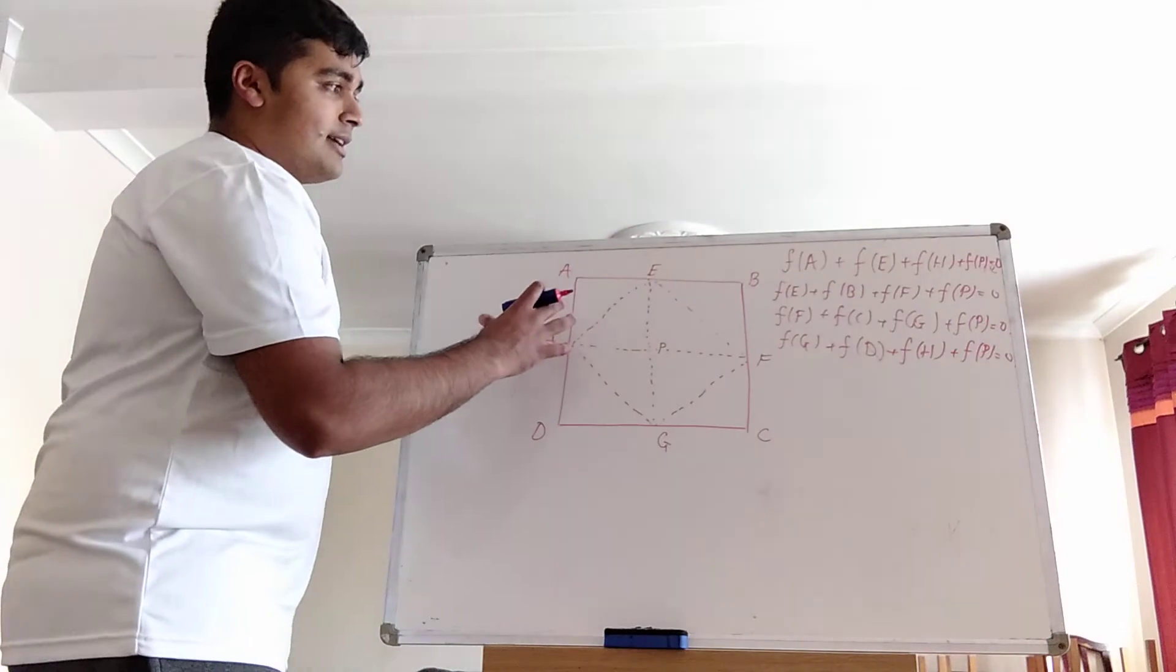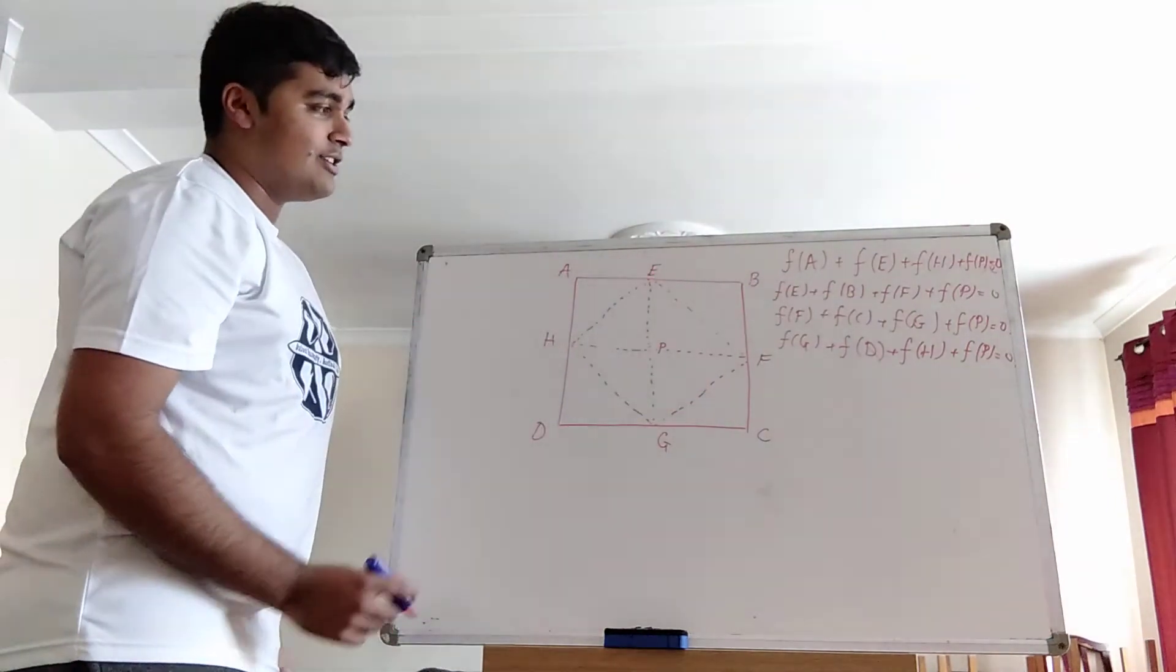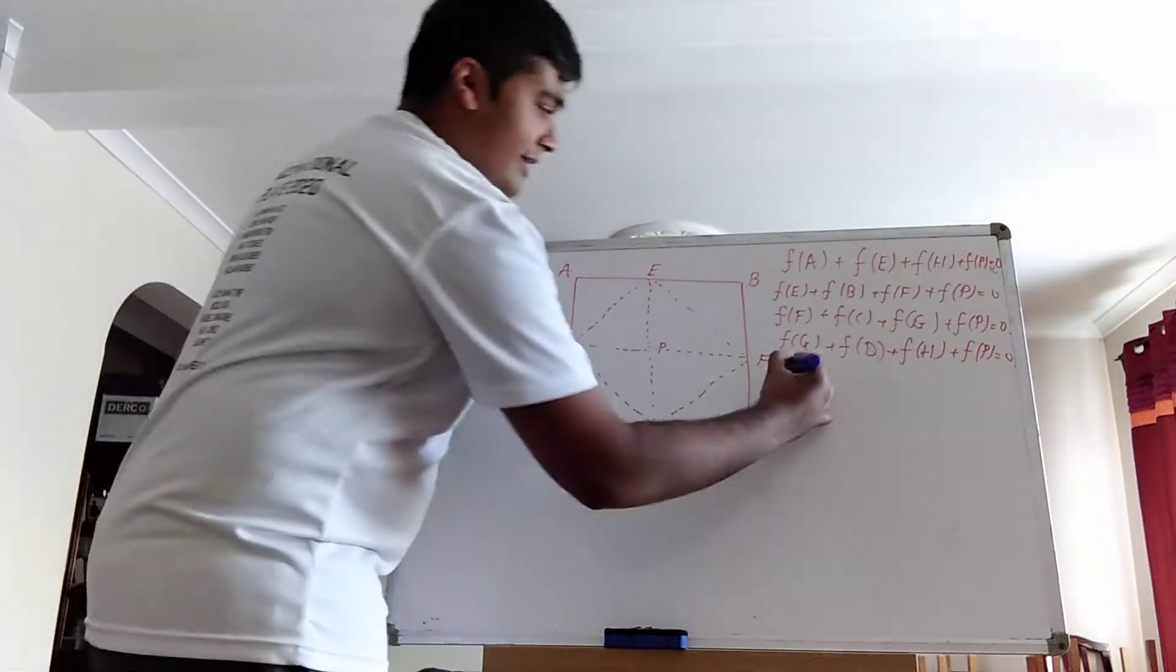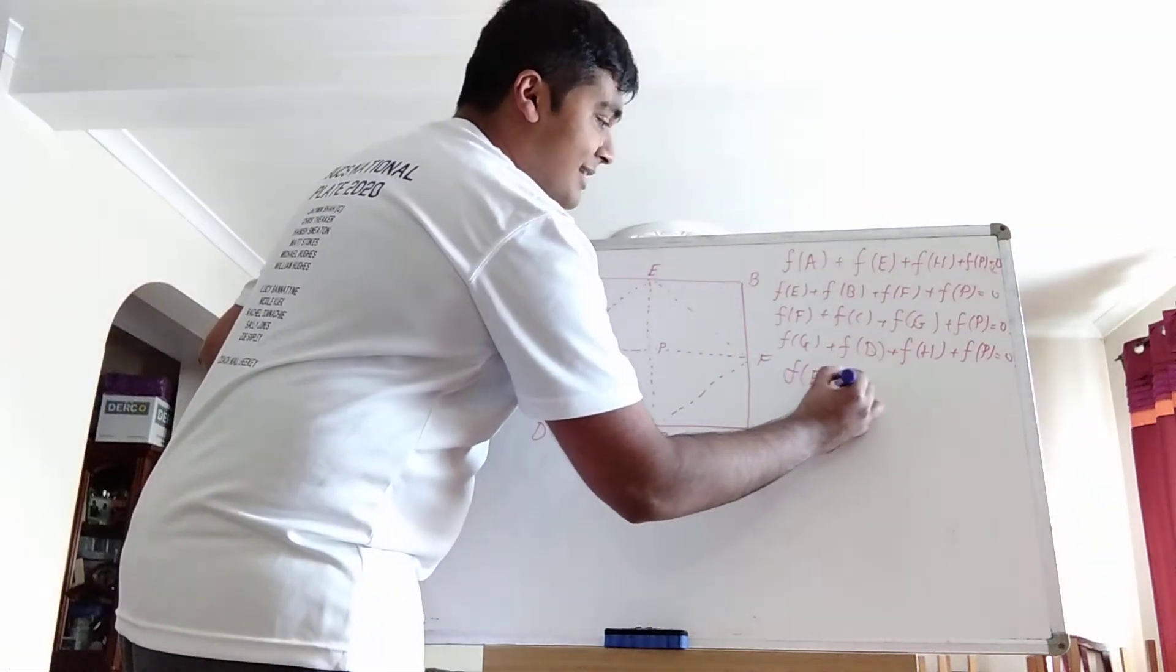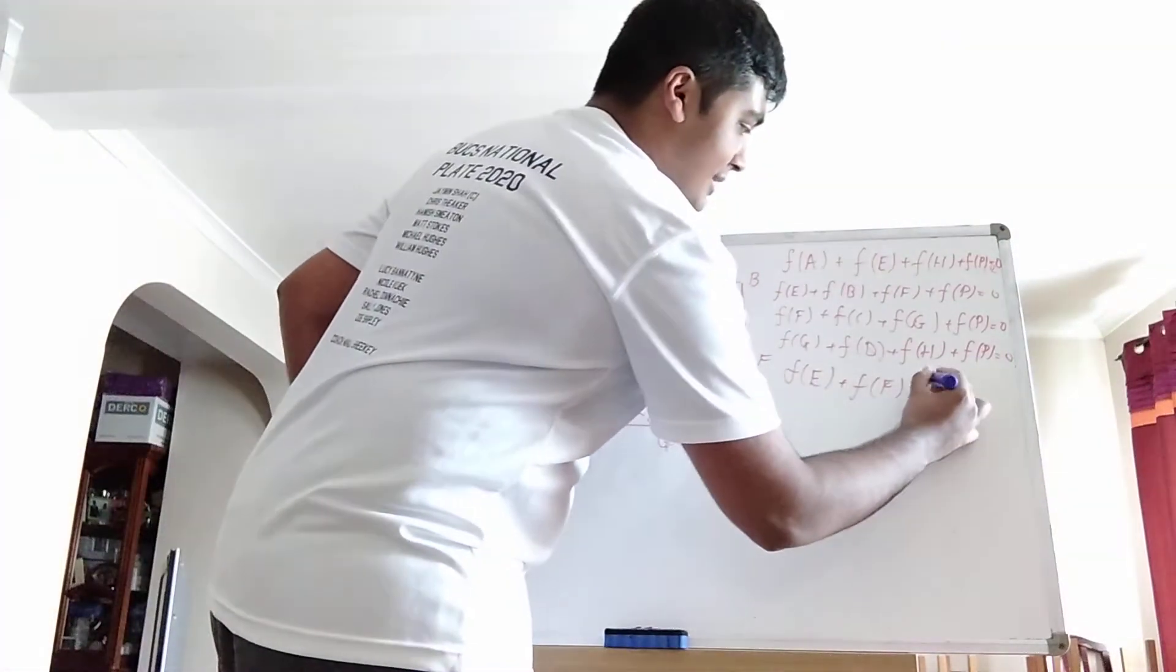Okay, well, we've done the equations for the smaller squares. Let's look at the next bigger square, e, f, g, h. Well, f(e) + f(f) + f(g) + f(h). And that equals zero.